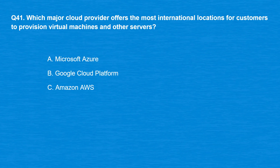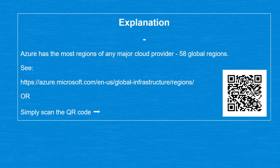Question 41: Which major cloud provider offers the most international locations for customers to provision virtual machines and other servers? Option A: Microsoft Azure. Option B: Google Cloud Platform. Option C: Amazon AWS. The correct answer is Option A, Microsoft Azure. Azure has the most regions of any major cloud provider — 58 global regions.